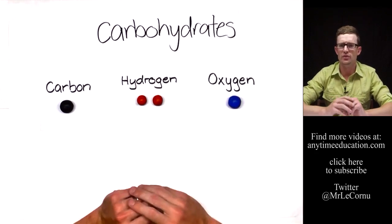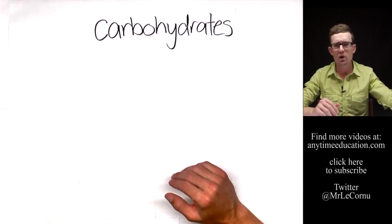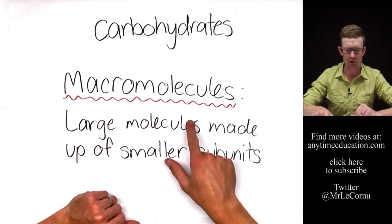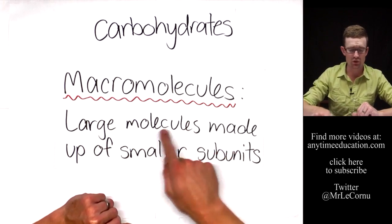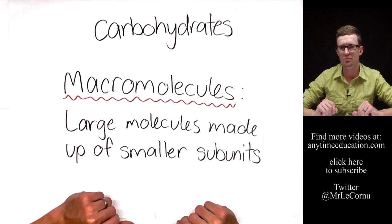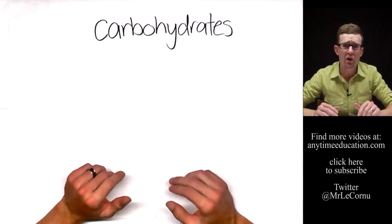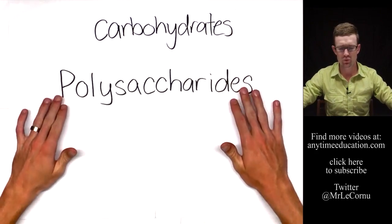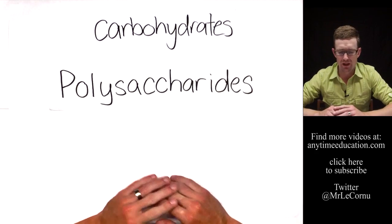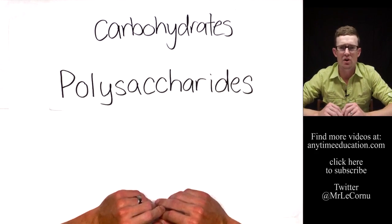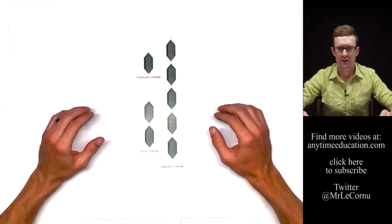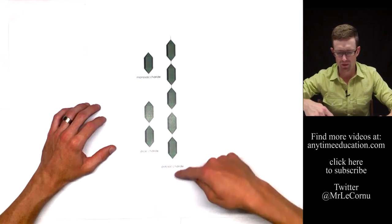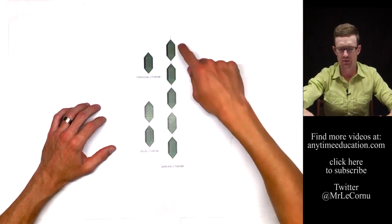That's how they get their name — carbohydrates — two hydrogen atoms for every oxygen atom. Now there are carbohydrate macromolecules. A macromolecule is a large molecule made up of smaller subunits. We call carbohydrate macromolecules polysaccharides. Here we have a simple diagram of a polysaccharide, which is a big long chain of smaller subunits.